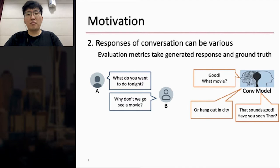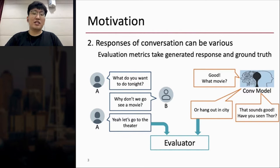So from this conversation, the conversation model should generate appropriate responses such as or hang out in the city. But A actually said, yeah, let's go to the theater. Then existing metrics such as BLEU takes the ground truth response and generated one and computes the similarity between them. And BLEU gives zero scores because there are no intersected words between them.